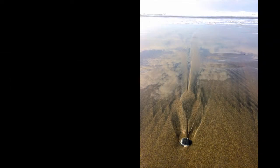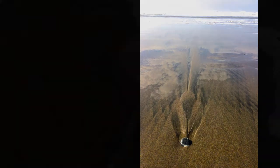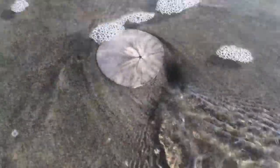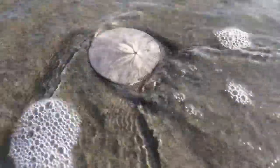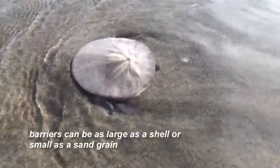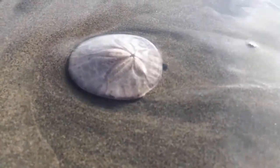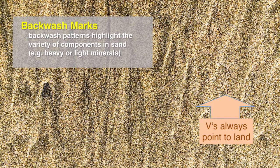Backwash marks are the crescent-shaped marks that you often see in sand, caused by water that's flowing back into the ocean. Quite often you see a strong appearance of these features as water flows around shells, rocks, or even your feet. Backwash marks are created by water that flows around a barrier and scours the sand around it. The complex flows lift and sort lighter materials from the heavier ones, resulting in the V-shaped patterns that you see. Remember, the V's in the backwash marks always point to the mainland.